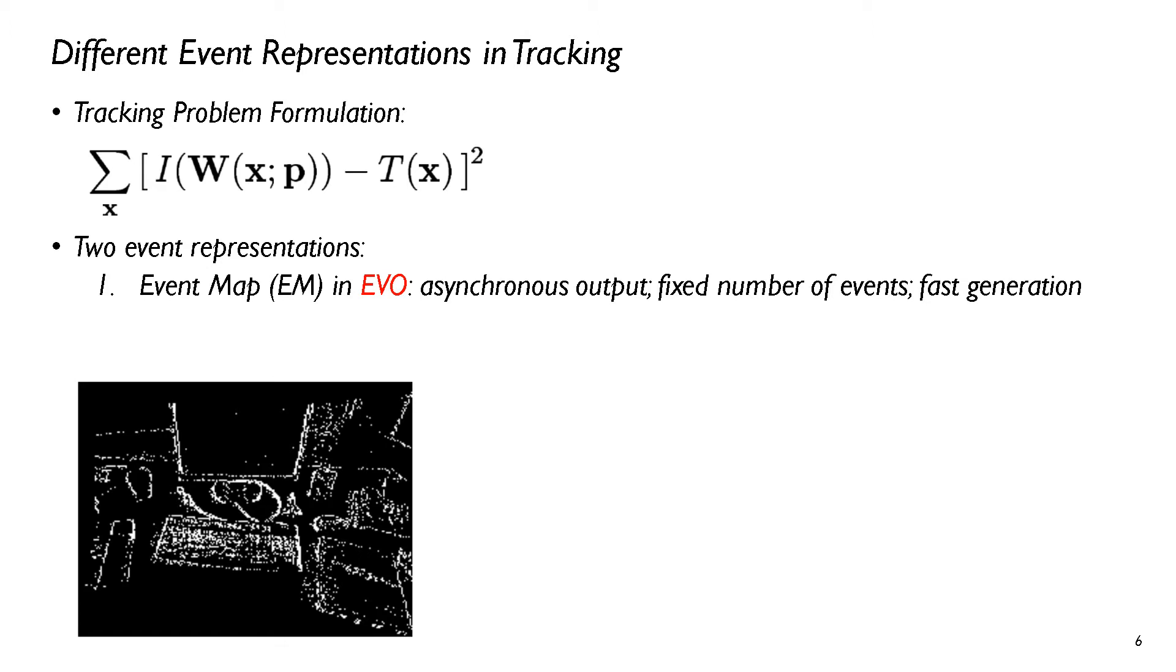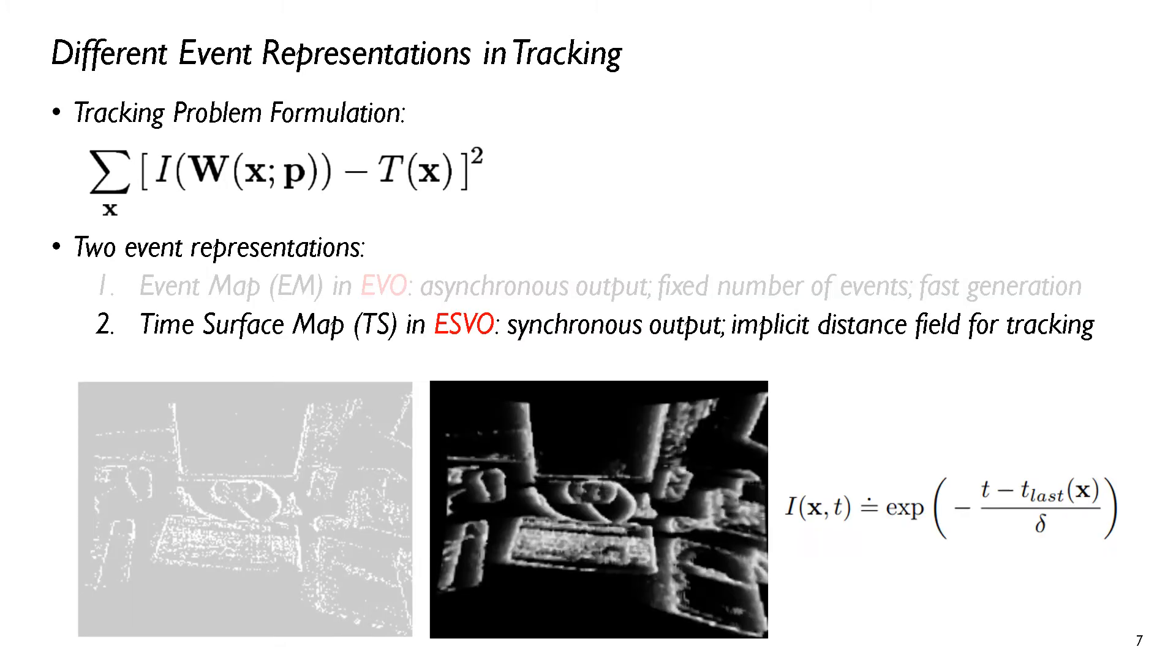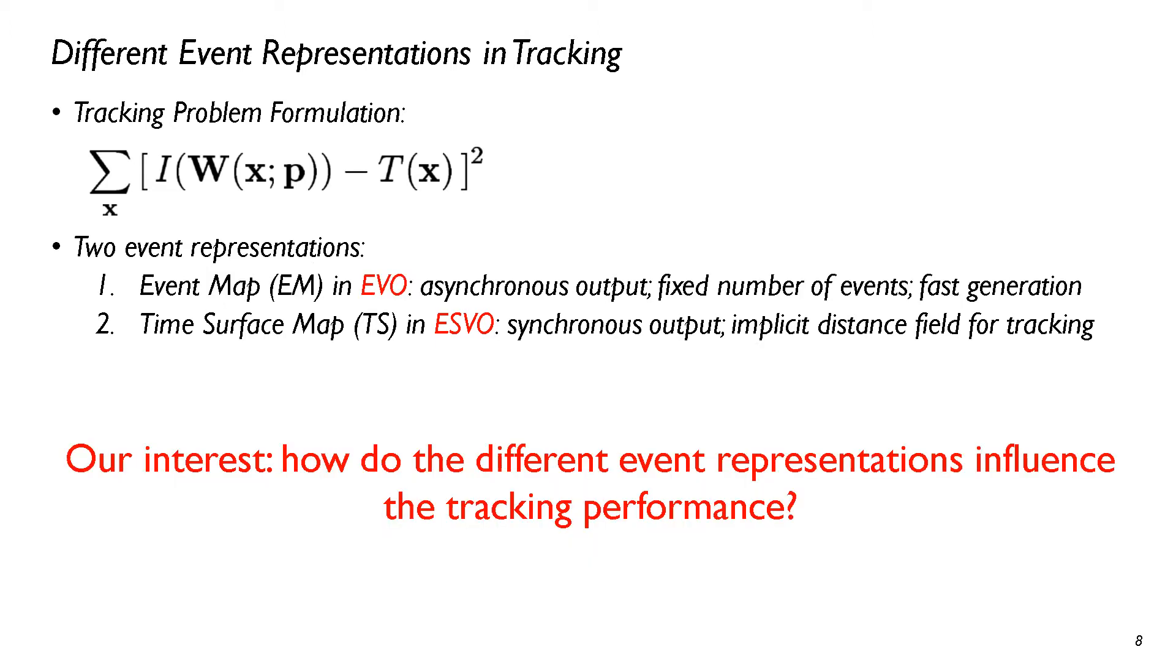Two event representations in EVIL and ESVO are shown: Event map and the time-surface map. Both of these event representations have different pros and cons. Our interest is to show how the different event representation influences the tracking performance.